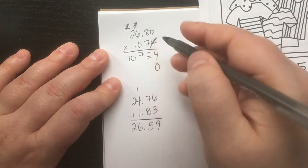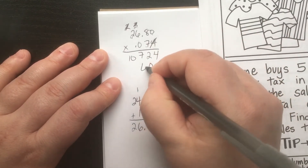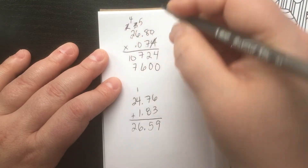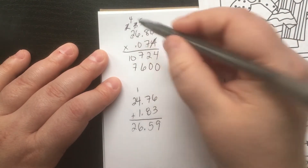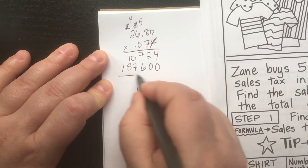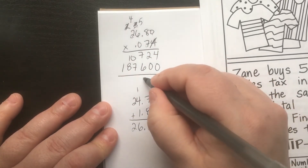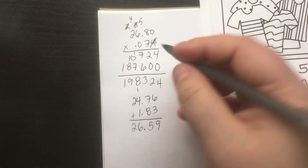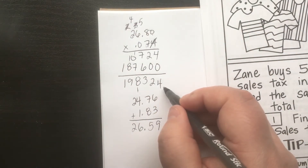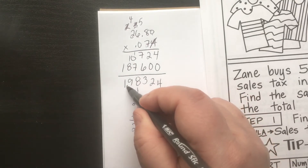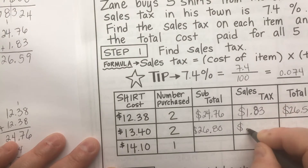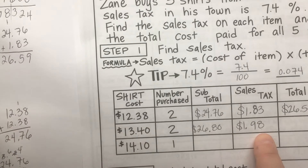Continuing with the sevens: seven times zero, seven times eight is fifty-six, seven times six is forty-two plus five is forty-seven, seven times two is fourteen plus four is eighteen. Adding up and placing the decimal — we have five decimal places, so we count over five. The tax is one dollar and ninety-eight cents — two cents less than two dollars.